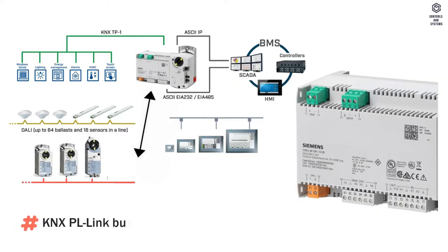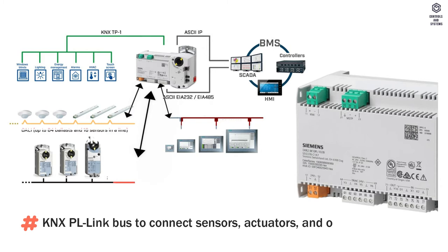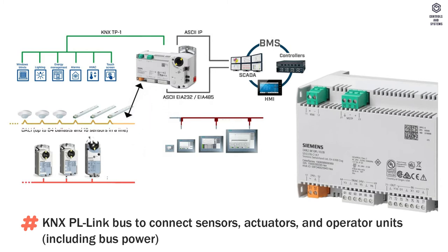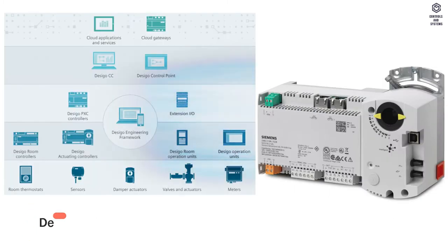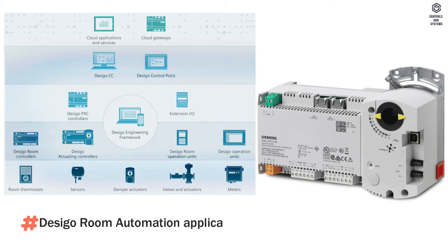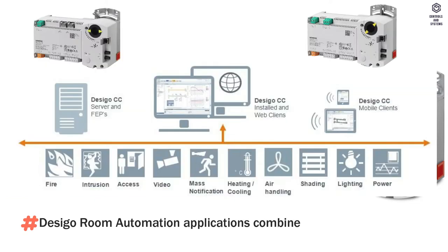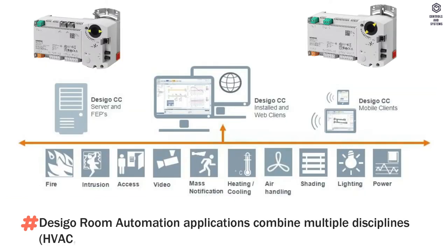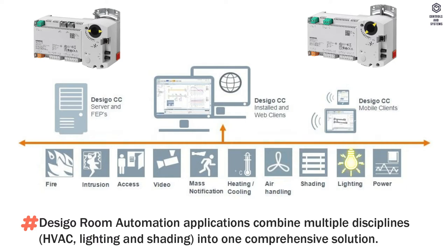It features a KNX PL link bus to connect sensors, actuators, and operator units, including bus power. Room automation applications combine multiple disciplines — HVAC, lighting, and shading — into one comprehensive solution.